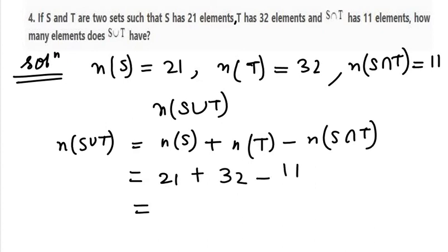21 plus 32 is 53, take away 11. So this will give us 42. So this is n(S∪T).